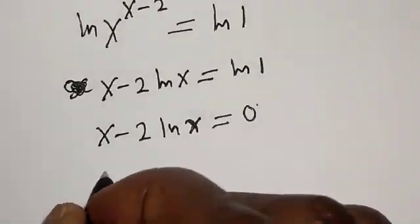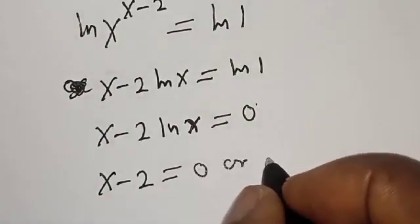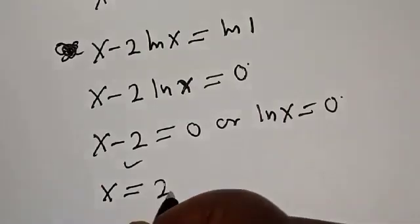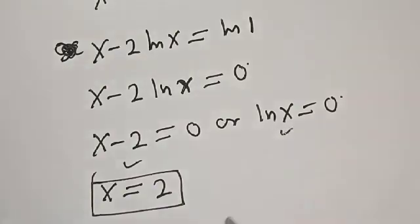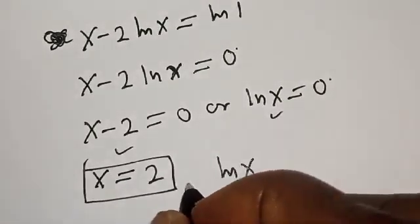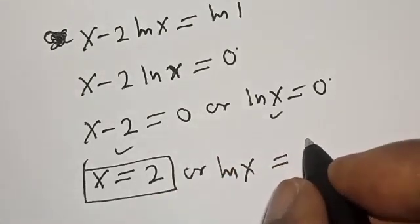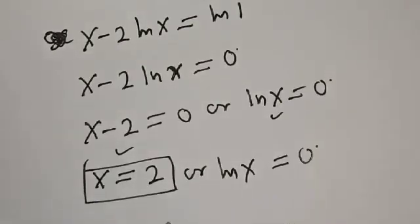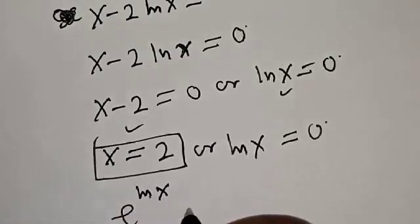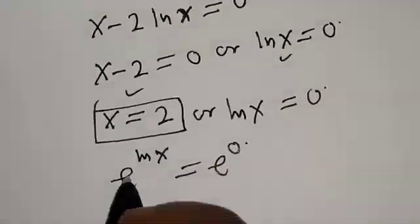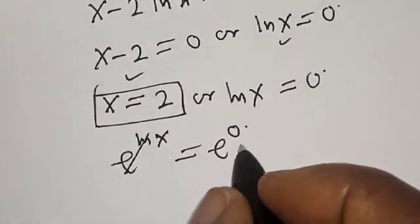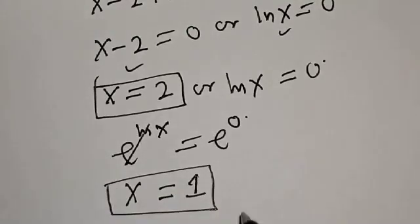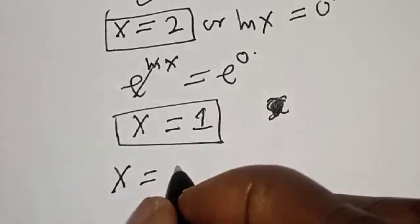Then we have two cases here: s minus two is equal to zero, or natural log of s is equal to zero. From the first case, s is equal to two. From the second case, we have natural log of s equals zero, so e raised to power natural log of s is equal to e raised to power zero. The e cancels the natural log, and e raised to power zero equals one, so s is equal to one.